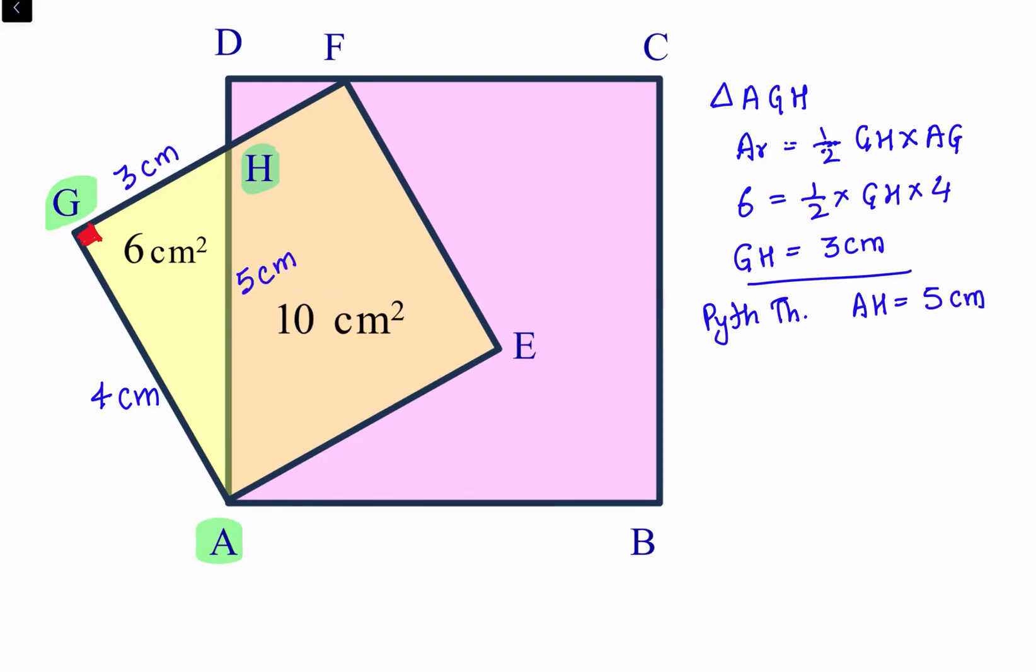Also, what's the value of FH? Because the side of the square is 4 centimeter, FH will be 1 centimeter.